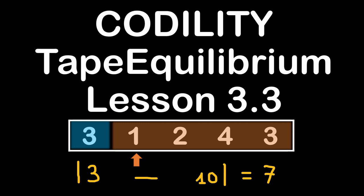In brief, the problem is: we are given an array of numbers and we start by calculating the sum of the numbers before a certain position, then the sum of the rest of the numbers on the right side of this separating position. Then we calculate the absolute difference between these two sums in order to find the position where we obtain the minimum value of this difference.